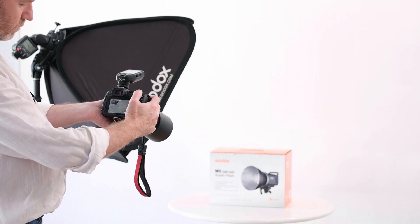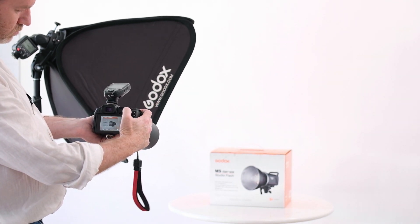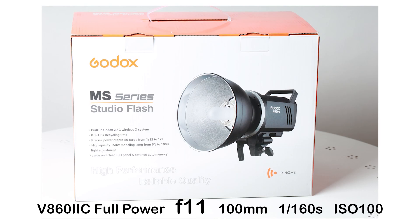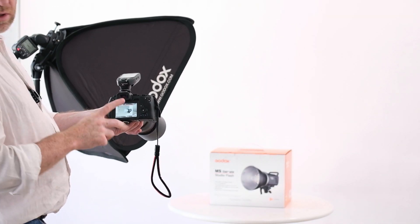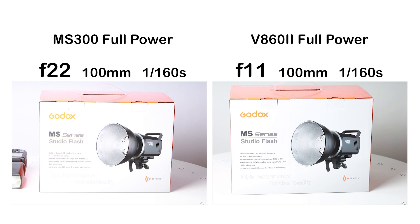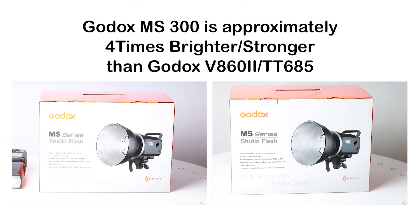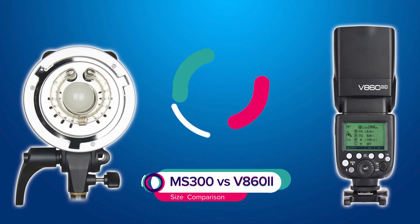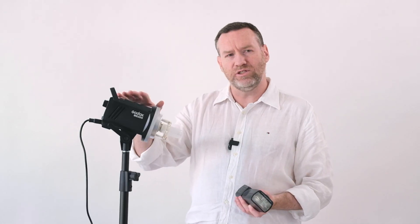If I go back to f/11 and try the same thing, now I've got that blinking indicating overexposure. So it looks like about a two-stop difference here between the speedlight and the MS300. That's obviously full power—you wouldn't drive a flash normally at full power, but it's nice to know if you ever need that kind of power that it's got it.